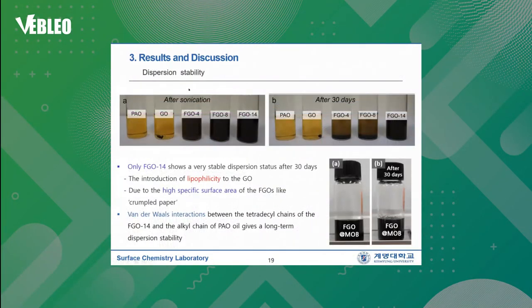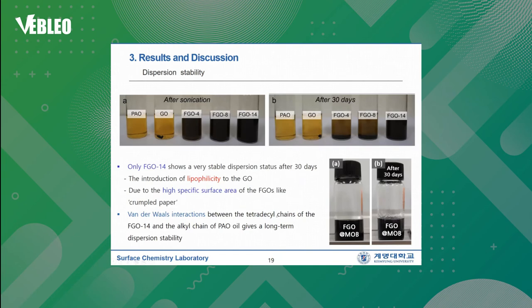This is the dispersion stability test result. After ultrasonication of the mixed system for one hour, all FCO samples were dispersed. Even though GO was not dispersed due to its hydrophobic property, after 30 days of storage, only FCO14 showed a very stable dispersion status. This is due to the introduction of lipophilicity to GO and the high specific surface area of FCOs like crumbled paper. The Van der Waals interaction between the tetradecyl chains of FCO14 and the alkyl chains of PAO oil provides long-term dispersion stability.